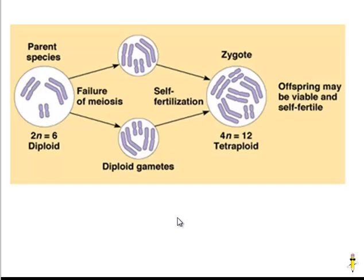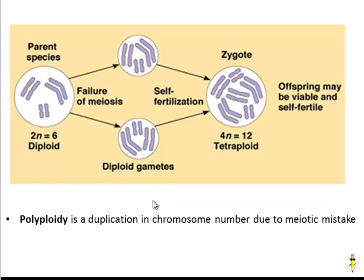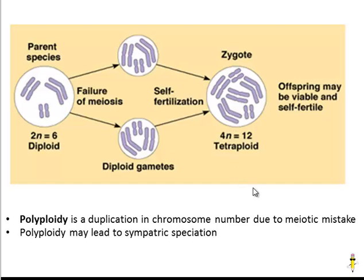The final method for sympatric speciation is called polyploidy. What happens here is that due to a problem with meiosis, the chromosomes of an organism are duplicated. During meiosis, the chromosomes should have been halved, but something went wrong. When these gametes get together, we end up with a zygote that has more chromosomes than it should — it should be 2n equals 6, but now it has 4n equals 12. That makes it a whole new species. With many organisms like animals, this would never work — the zygote would die. But with plants, they can manage this and self-fertilize, so polyploidy is very common in plants. In fact, the majority of plant species have arisen due to polyploidy — these mistakes in meiosis.